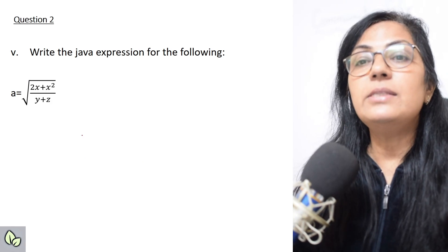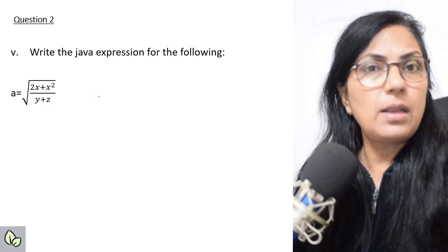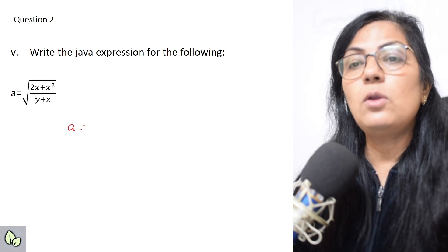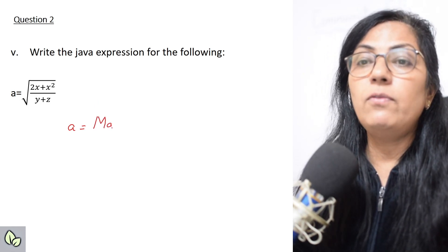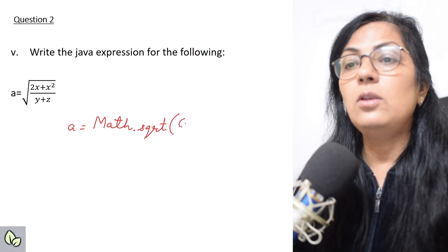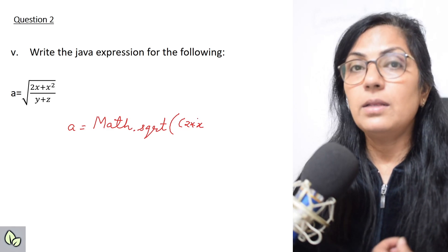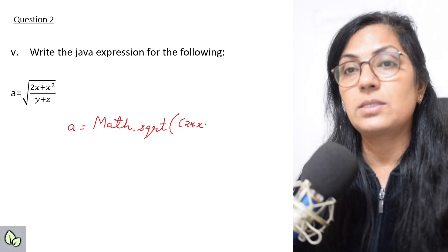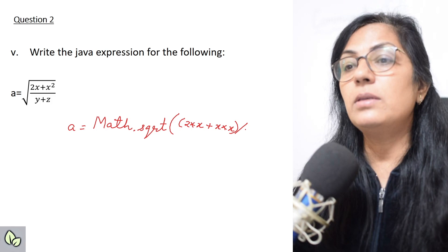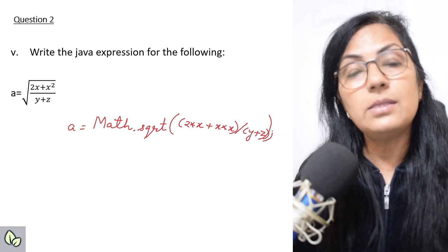Next question: write the Java expression for a = √(2x + x²) / (y + z). Note that data type is not mentioned, so don't write any data type. The answer is: a = Math.sqrt((2 * x + x * x) / (y + z)). In Java, you cannot write 2x as in mathematics — you must write 2 * x explicitly. You can also use Math.pow for x squared. The denominator is (y + z) and we close the bracket.